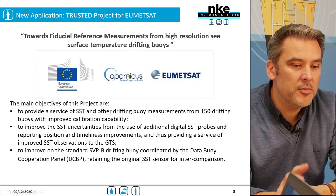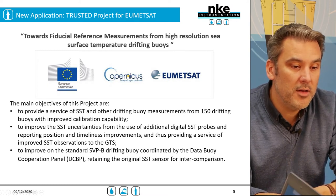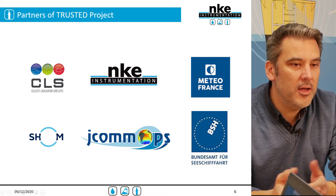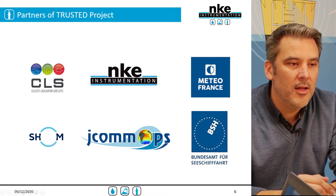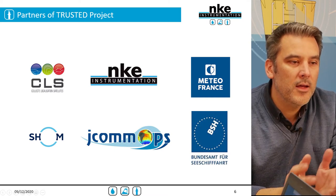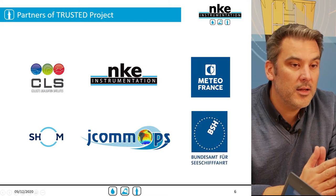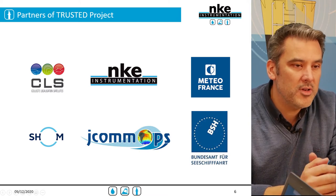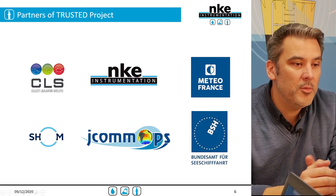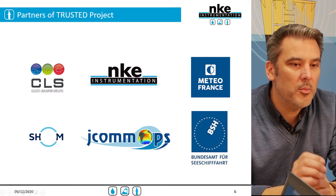Following the successful deployment of two prototypes in the Mediterranean Sea, a production of 100 units was approved, and very recently another batch of 50 units was ordered by EUMETSAT. Six partners jointly prepared the answer to this requirement, each with defined roles: CLS was in charge of project management and data transmission; NKE Instrumentation was in charge of design and buoy manufacture; Meteo France was dealing with deployment; SHOM was in charge of metrological control and calibration; JCOMMOPS was in charge of metadata; and BSH was in charge of testing the buoy by comparison with the EUMETSAT system.